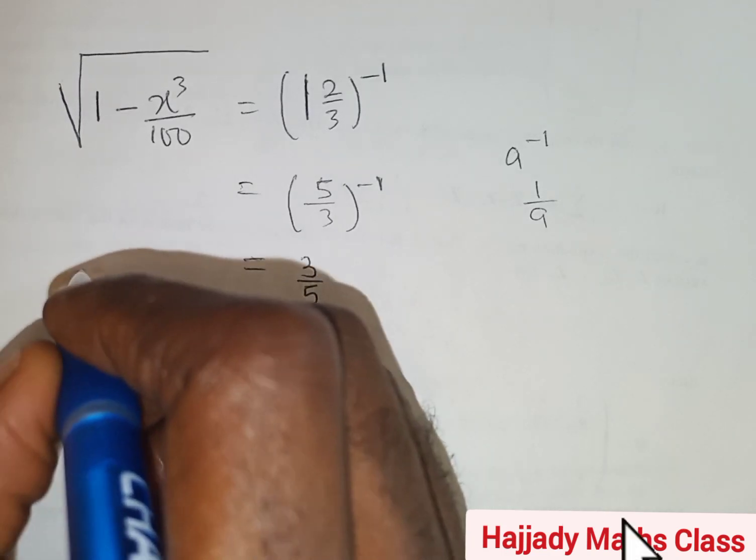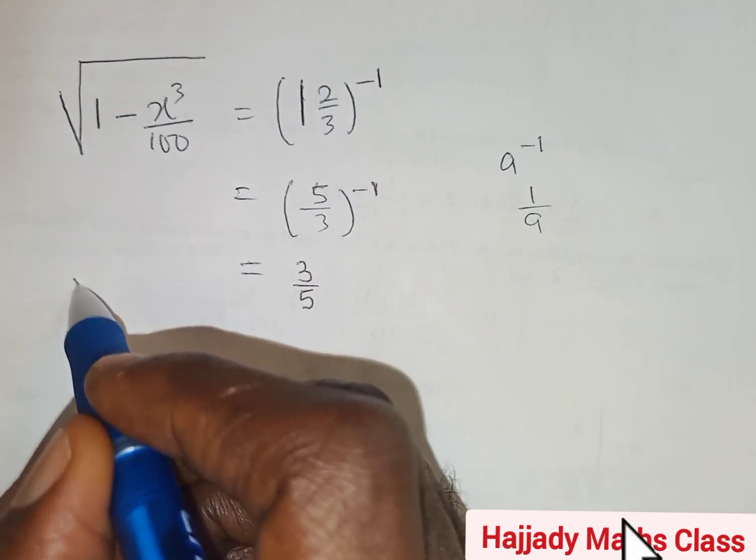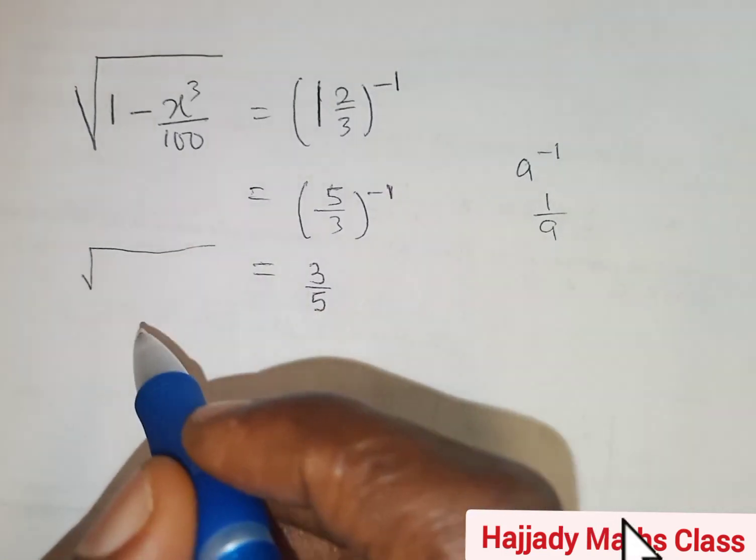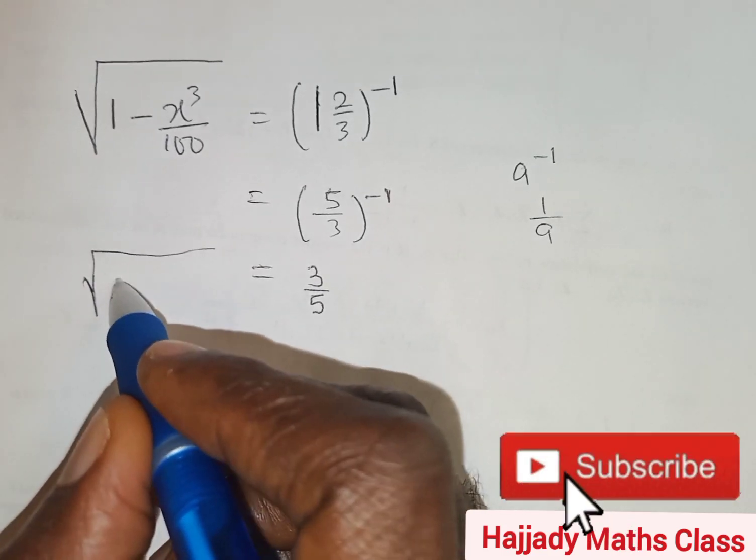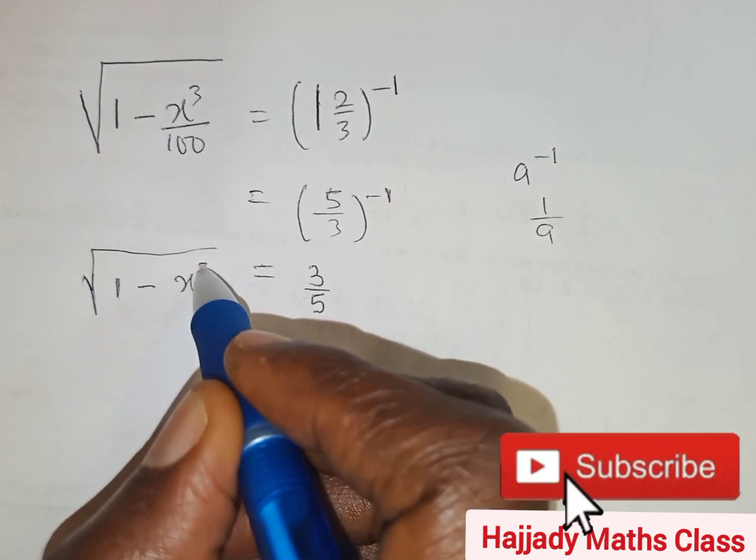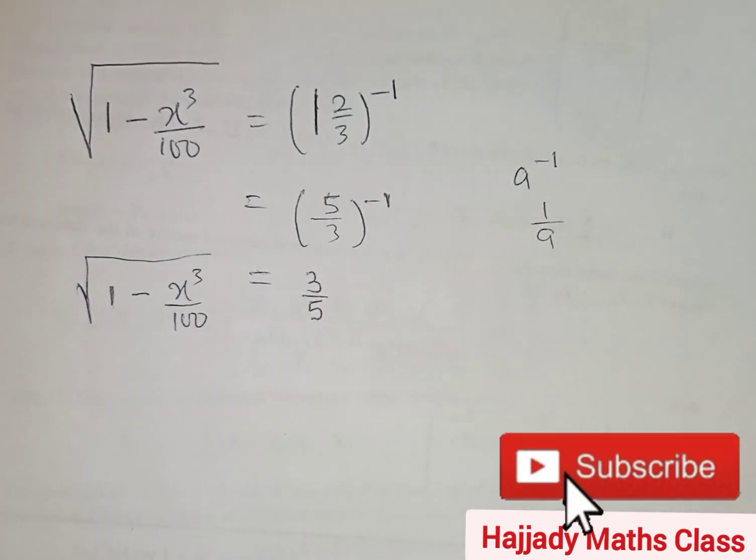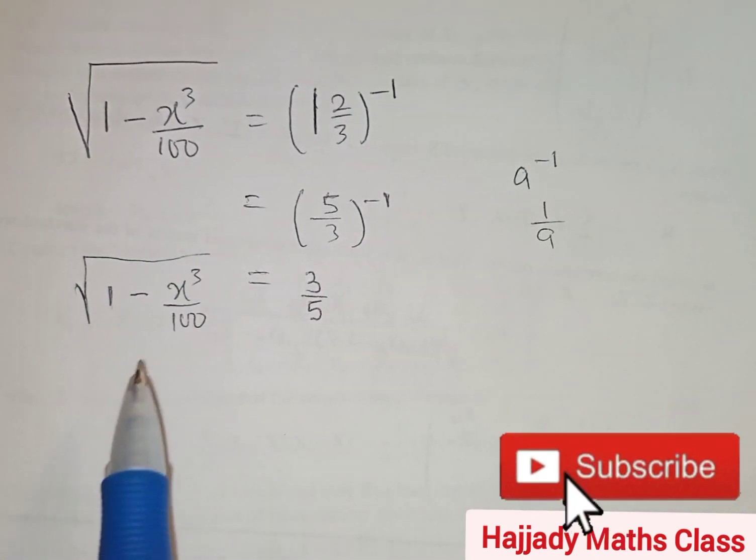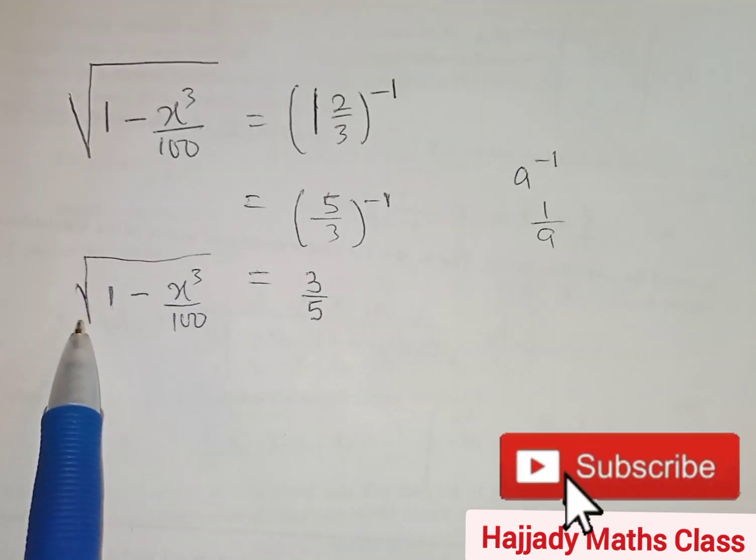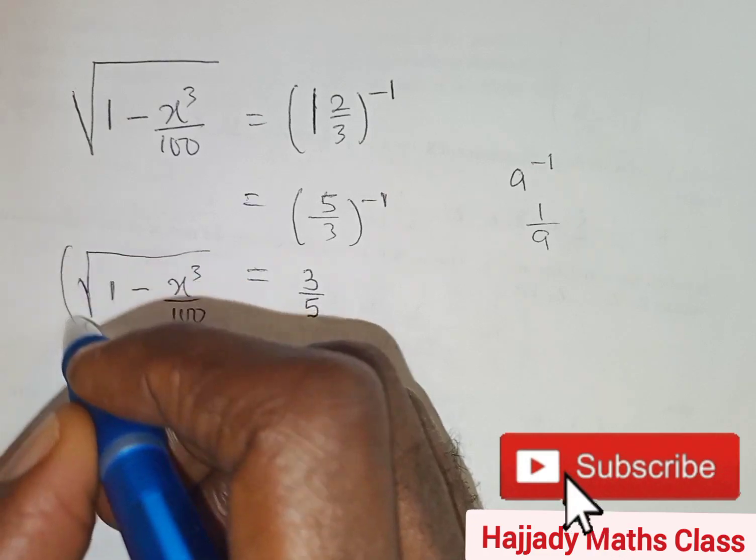So equating it to the left hand side, which is the square root of 1 minus x raised to the power 3 over 100. Now solving both sides, there's a way for us to eliminate the square root sign and the only way is to square both sides.